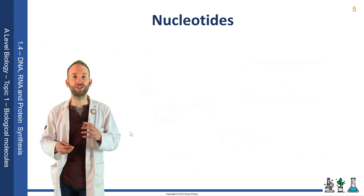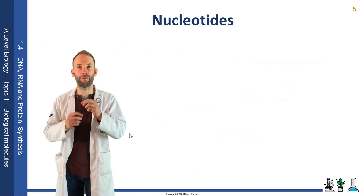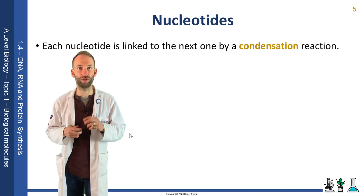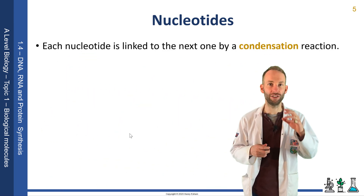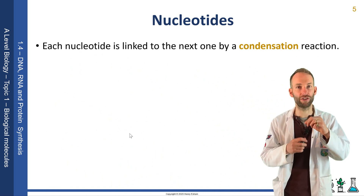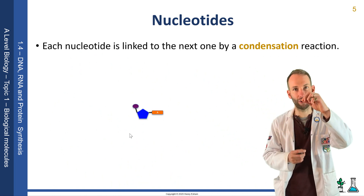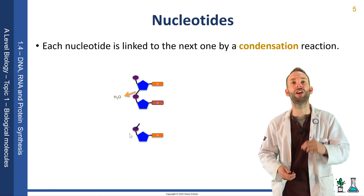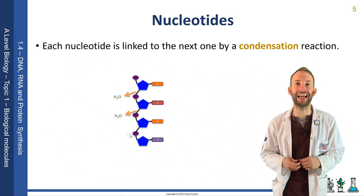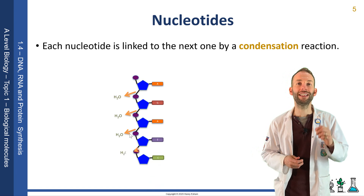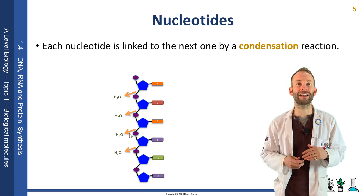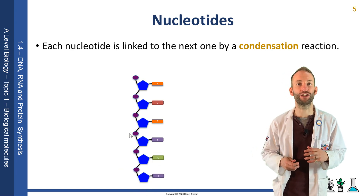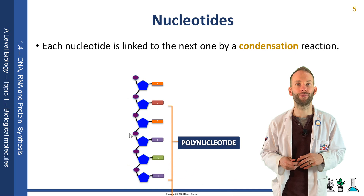Each nucleotide is linked to the next one by a condensation reaction. You remove water, and you can link on another nucleotide to make our polynucleotide, to make our strand of DNA. When you link one to the next, you form a new bond called a phosphodiester bond.